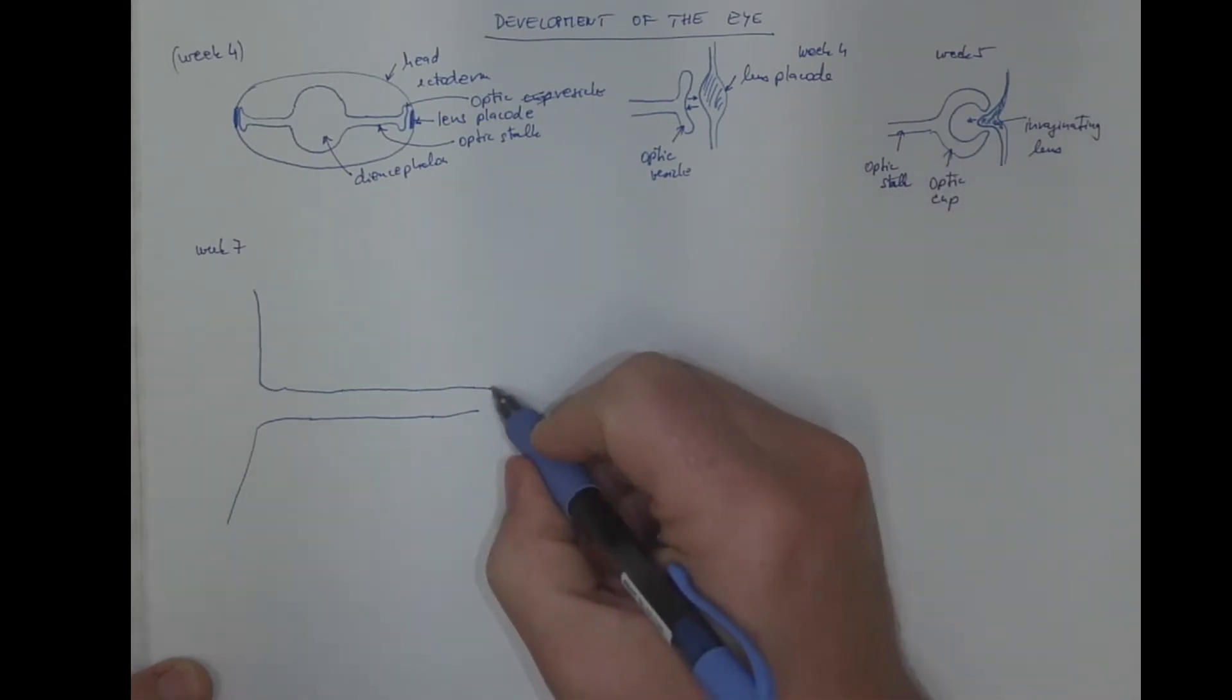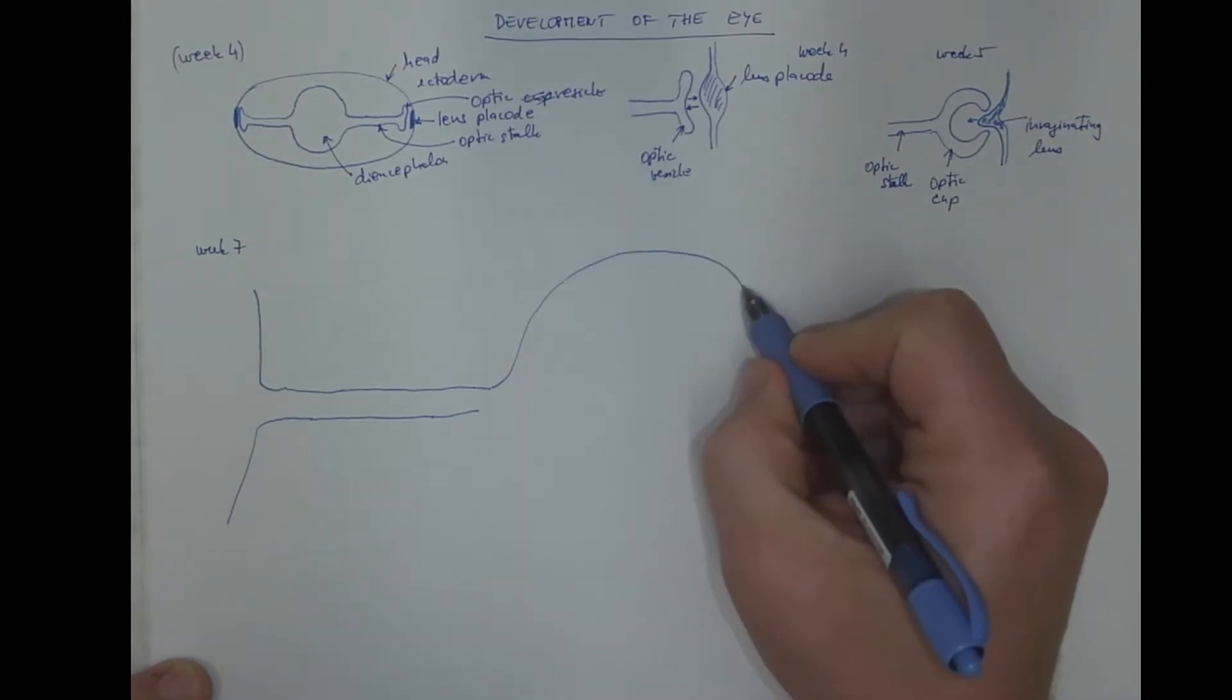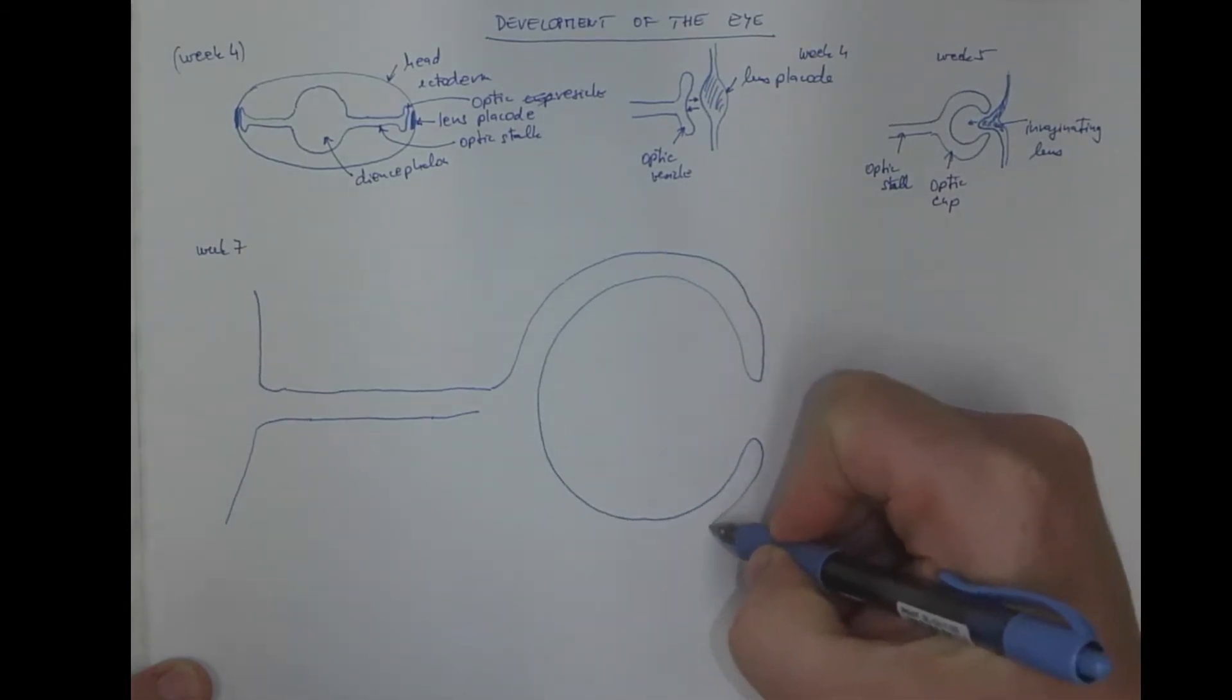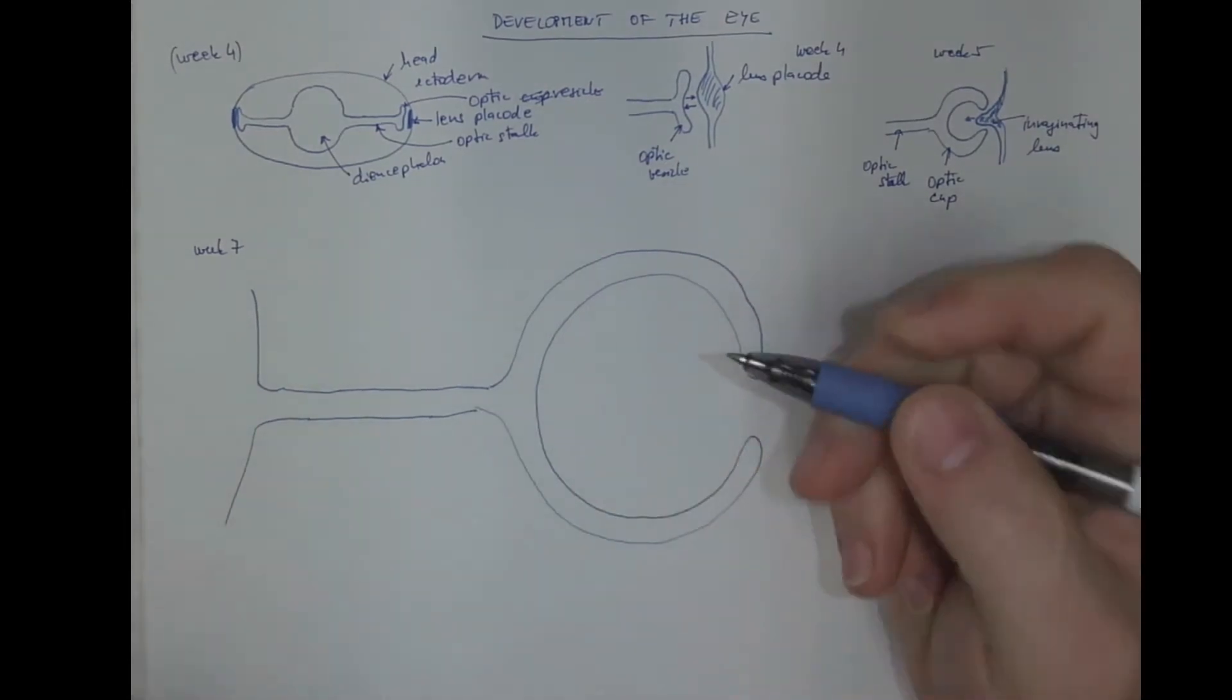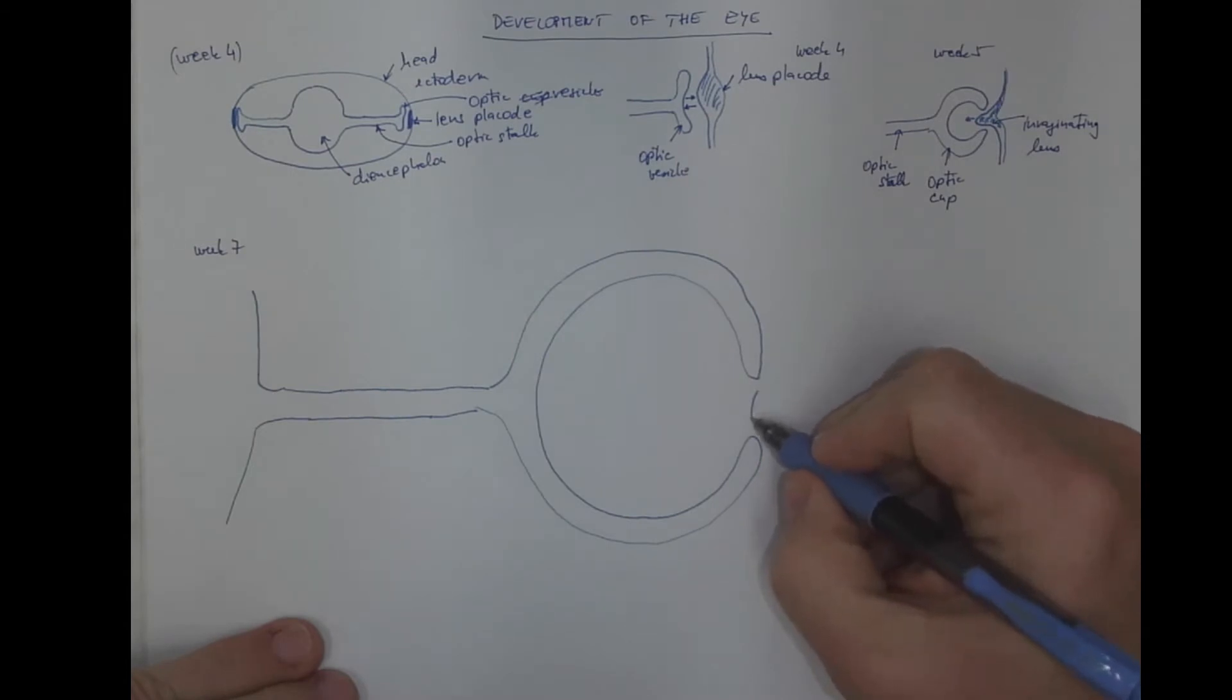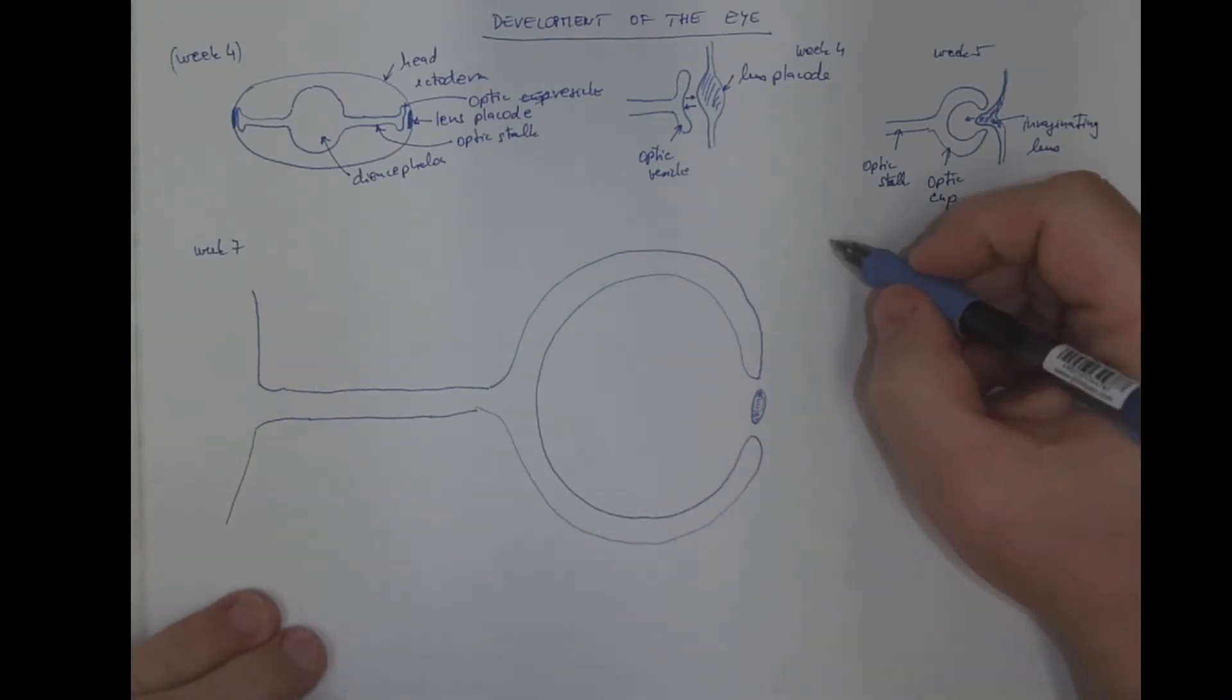The two layers of the optic cup become the two layers of the retina. The lens will become an independent object with lens epithelium and lens fibers, making it a solid organ.